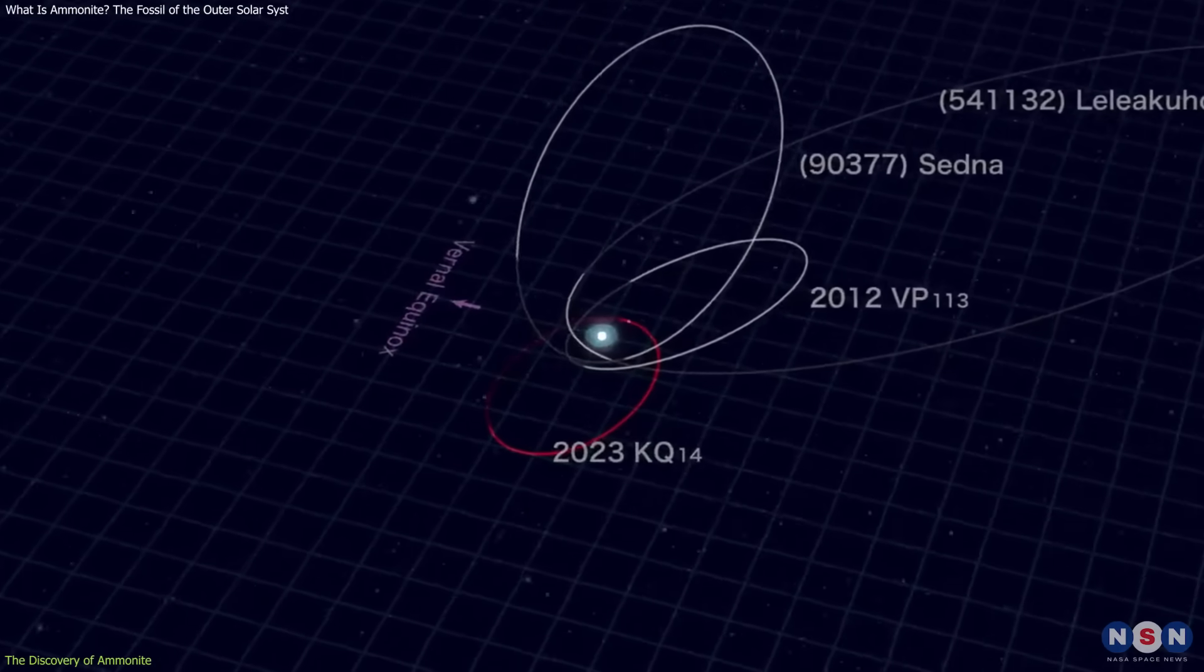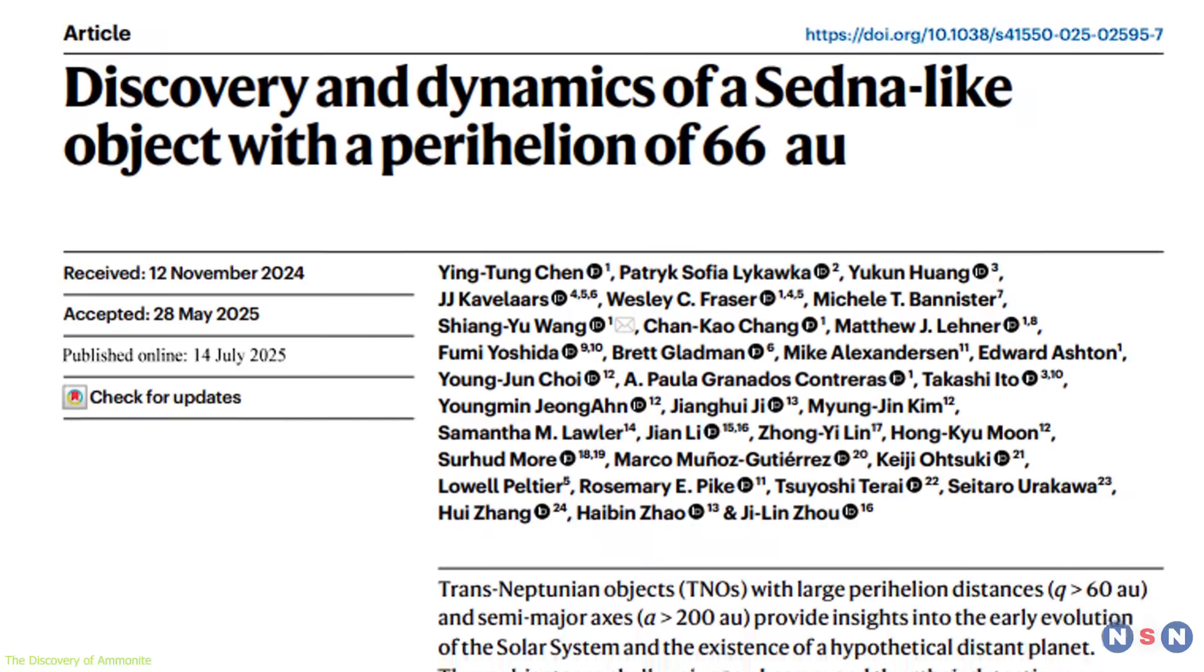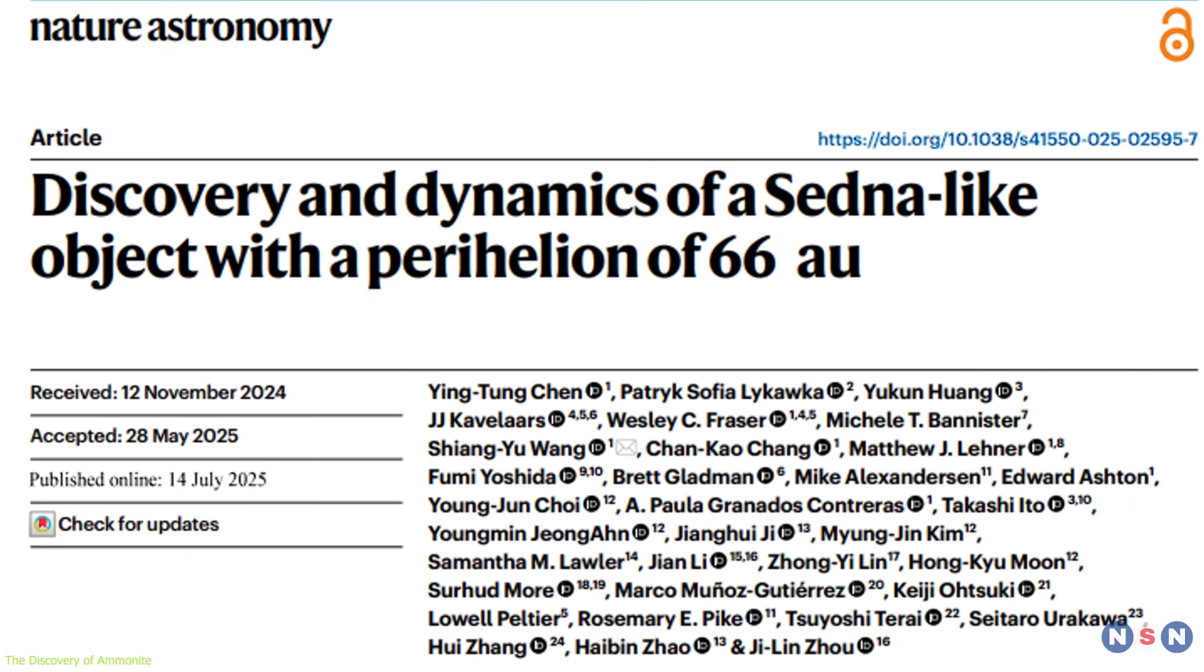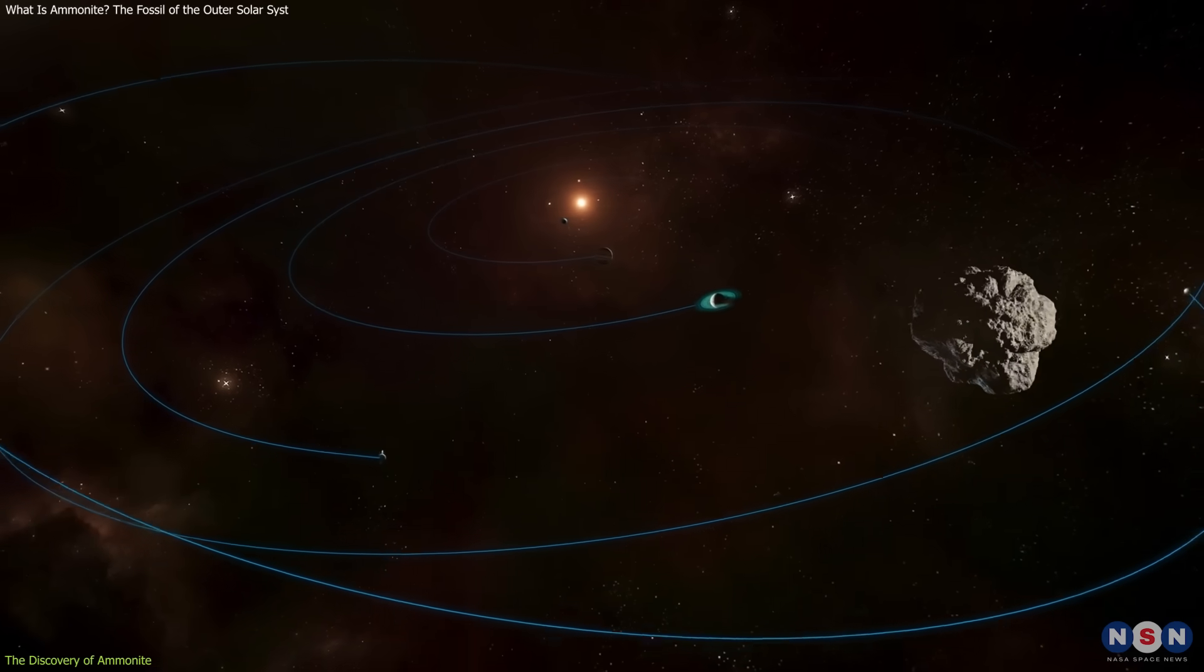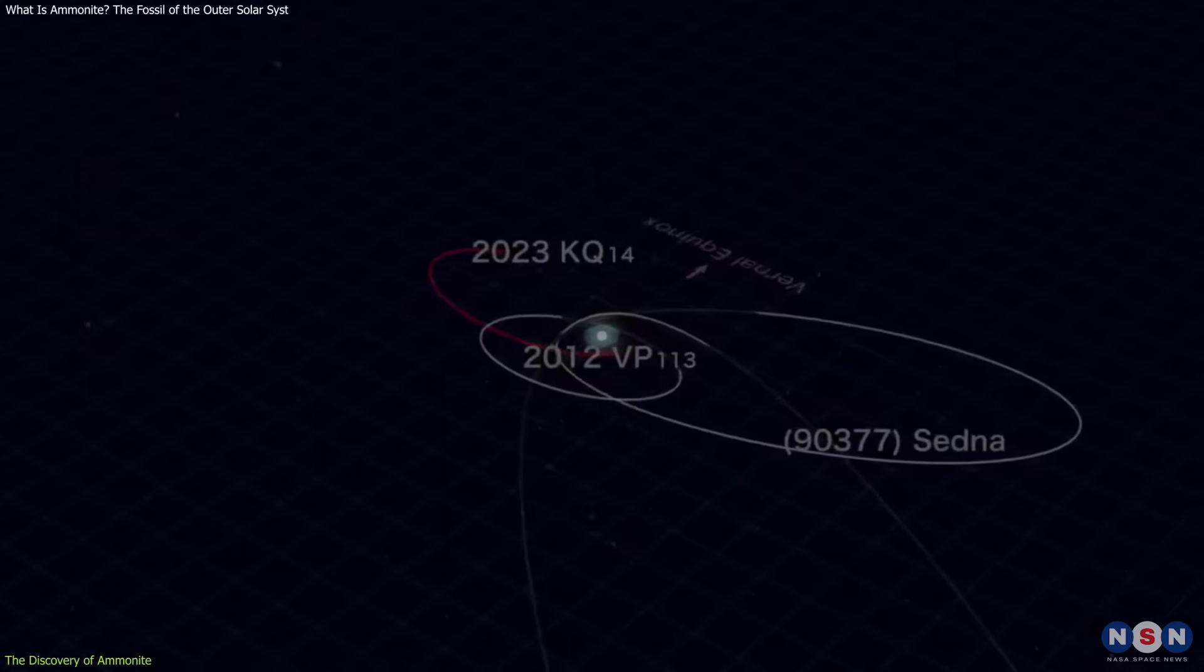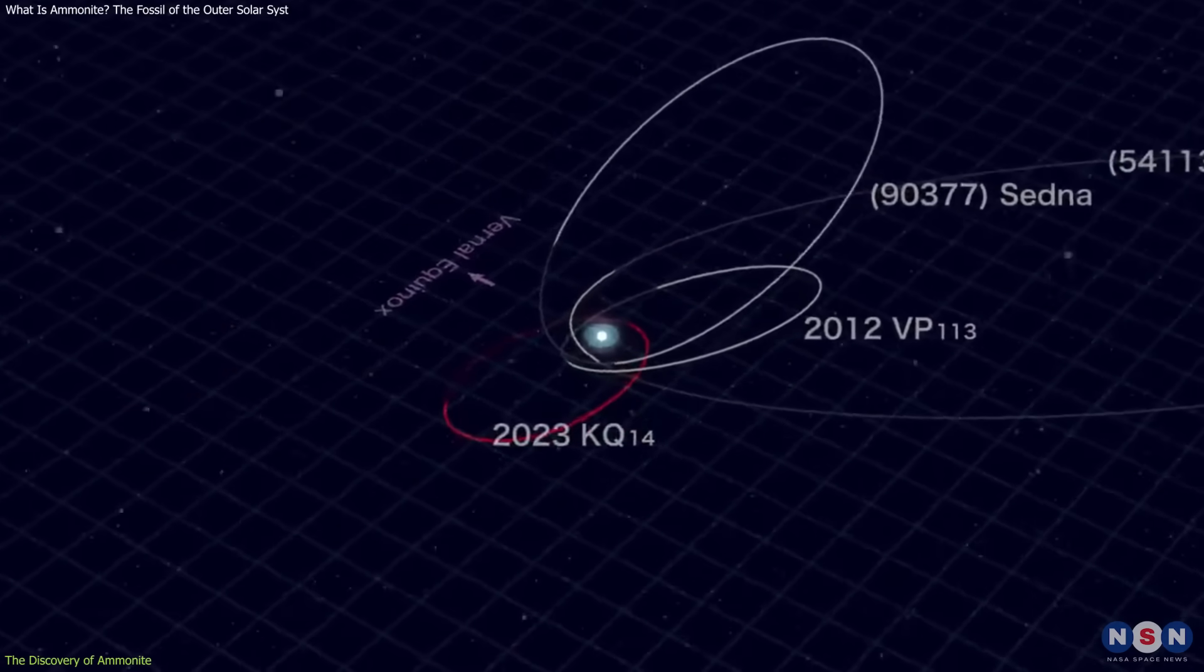It travels in an elongated loop around the Sun, swinging in from about 66 astronomical units, AU, and drifting as far out as 438 AU, well beyond Pluto. One full orbit takes nearly 4,000 years.